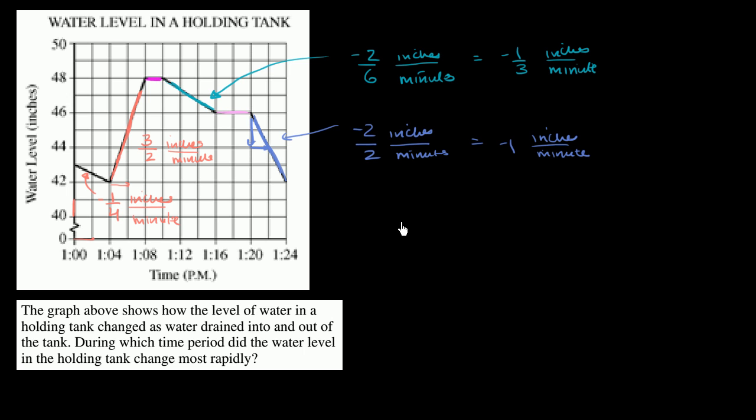So if you just take the absolute value, we just want the most rapid change, whether we're increasing in level or decreasing in level. Here it's negative one fourth. Here it's three halves, or one and a half.